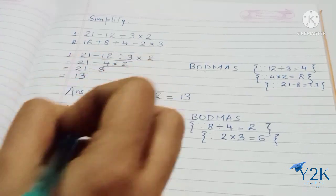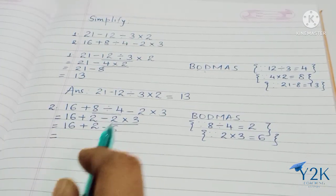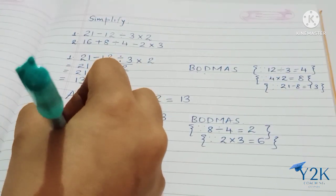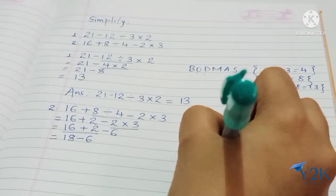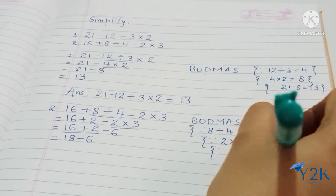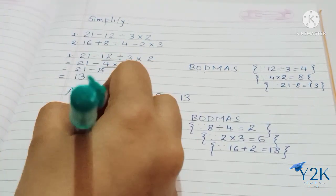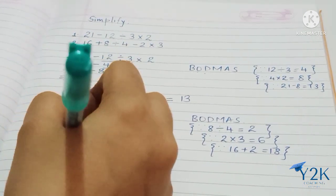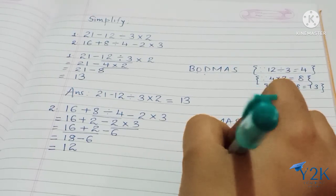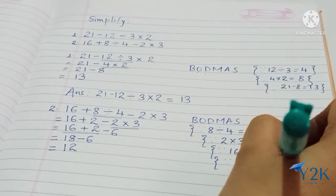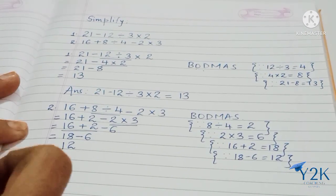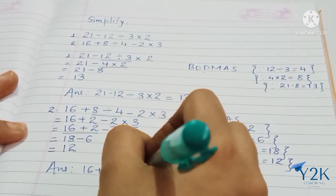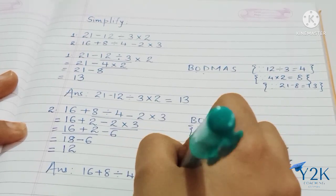Now we have addition and subtraction left. According to BODMAS we take addition first: 16 plus 2 gives 18, minus 6. Mention that 16 plus 2 gives 18. Now 18 minus 6 — do backward counting from 18, 6 fingers backward — that gives the answer as 12. Mention that 18 minus 6 is 12. So the answer of the second sum is: 16 plus 8 divided by 4 minus 2 into 3 equals 12.